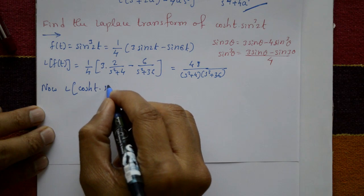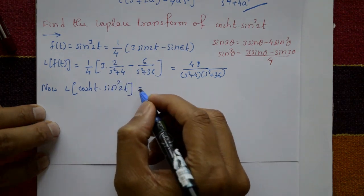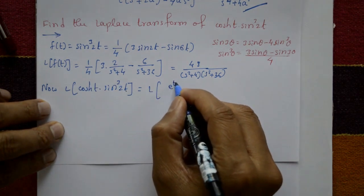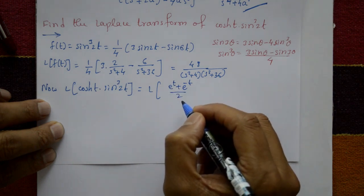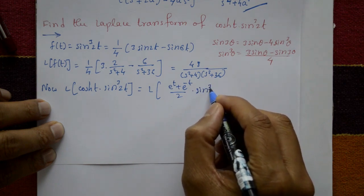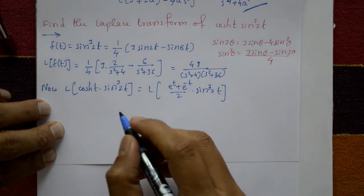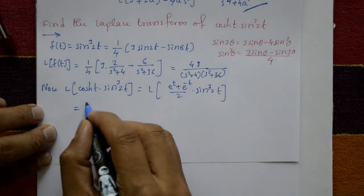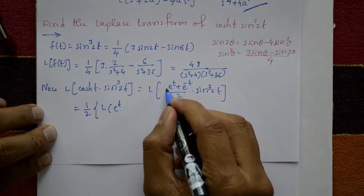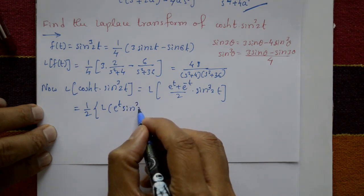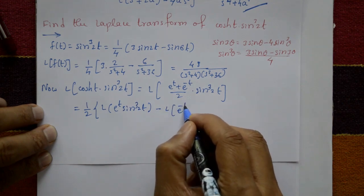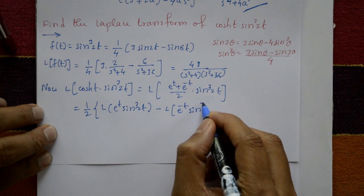The Laplace transform of cosh(t)·sin³(2t) uses the standard formula cosh(t) = (eᵗ + e⁻ᵗ)/2. So this becomes 1/2 · L{eᵗ · sin³(2t)} minus 1/2 · L{e⁻ᵗ · sin³(2t)}.